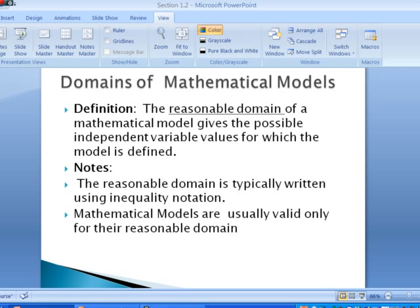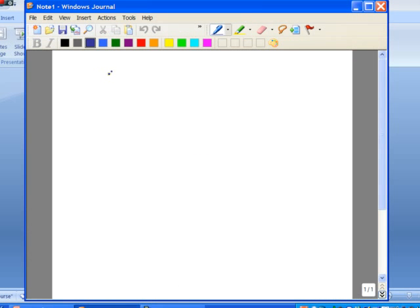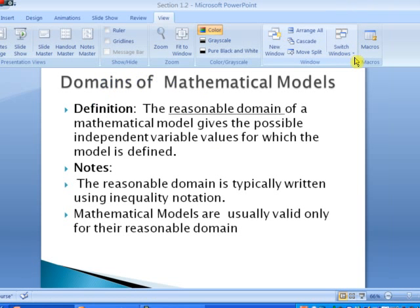A model is only defined for its tabular values, so we have to have a beginning point and an end point. These reasonable domains are usually written using inequality notation, something like A is less than or equal to x is less than or equal to B, where A and B represent the endpoints, the beginning and end years for our model. The thing we have to caution about is that mathematical models are usually valid only for their reasonable domain. We can't take a mathematical model and have it extend out 20 years in the future because we don't know what's going to happen.